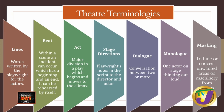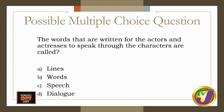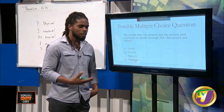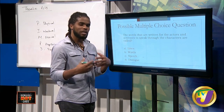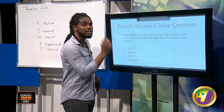Here are some possible questions you may see on your CSEC paper. First: the words written for actors and actresses to speak through the characters are called — A: lines, B: words, C: speech, D: dialogue. Remember that dialogue is talking between characters, but the words written on the script for actors to say are called lines. Second question: what refers to notes put into the script by the playwright to tell the director and actors what and how they want something done on stage? The answer is stage directions.